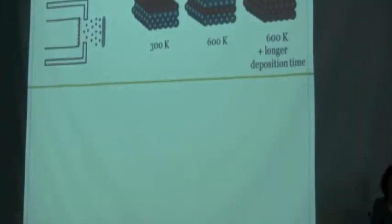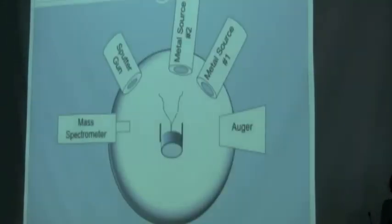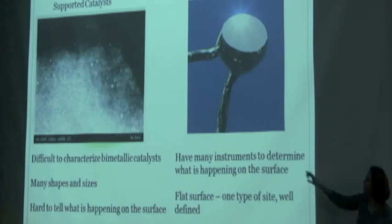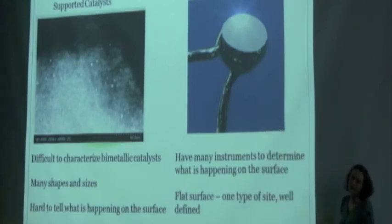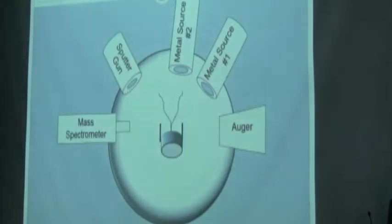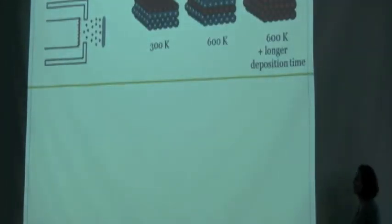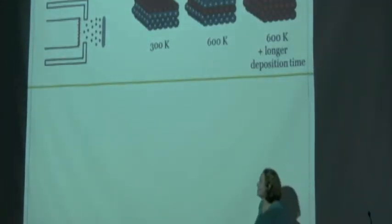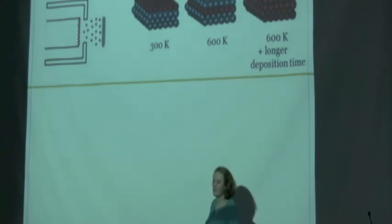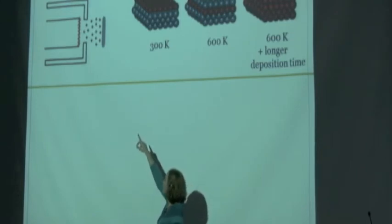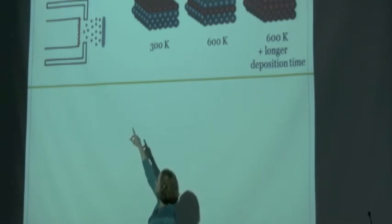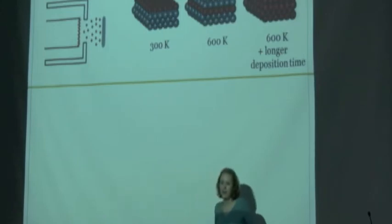For my experiments, we take this surface right here — it's called a crystal, a platinum crystal — and we deposit a second metal onto the surface. The way we do this is we heat up the second metal so that it will vaporize.